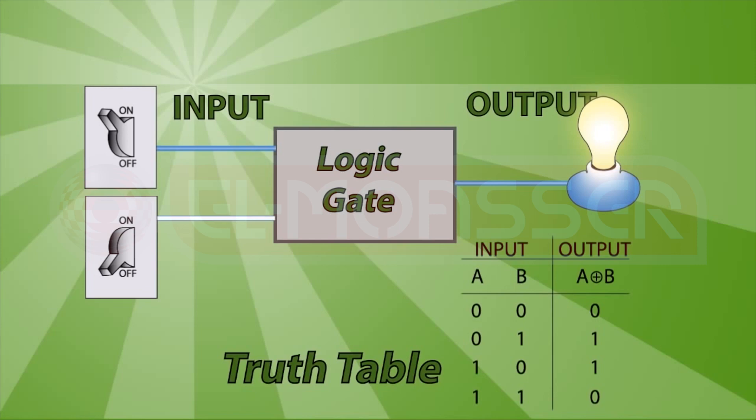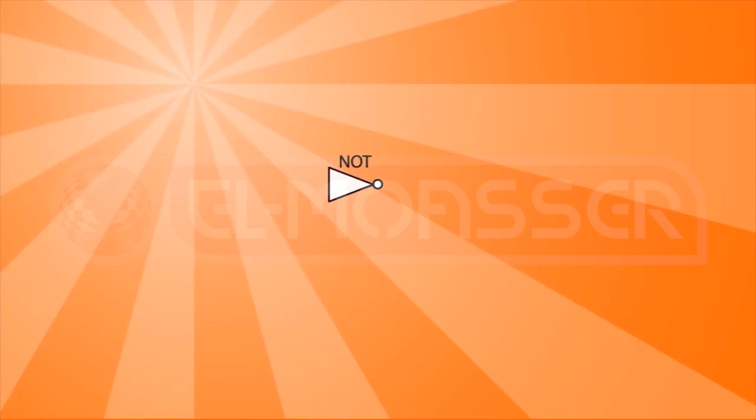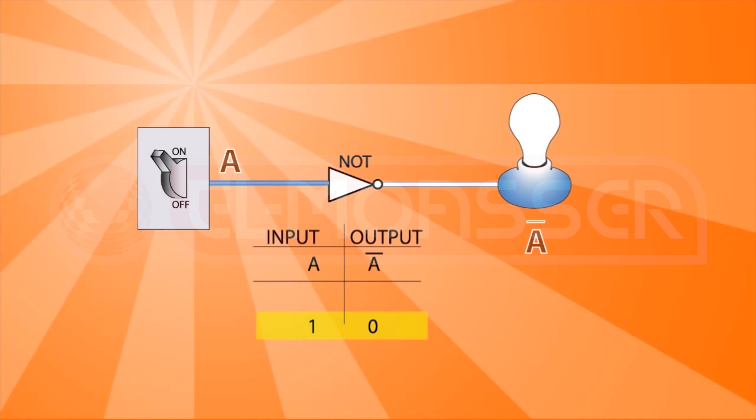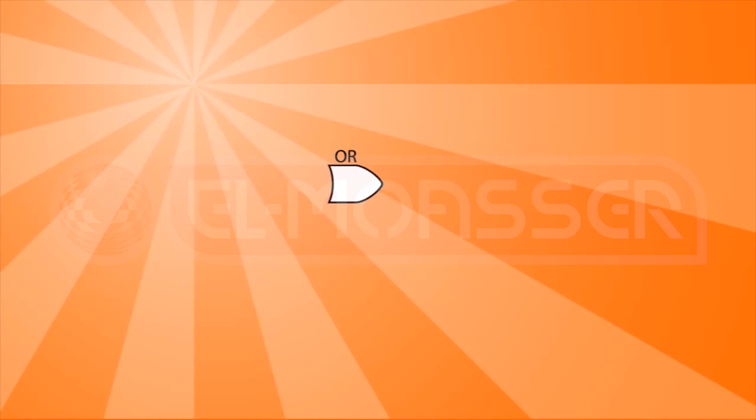This is a NOT gate. It has one input and the output. As the name suggests, it's the opposite of the input. The output is not the input. Denote the input A. If A is one or on, then NOT A is zero or off. If A is zero, then NOT A is one.